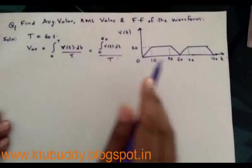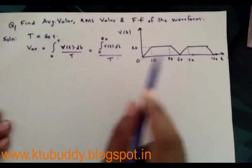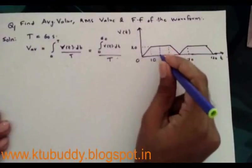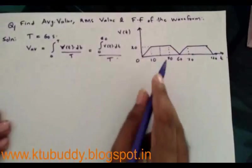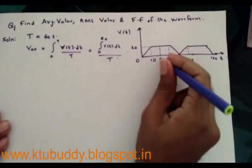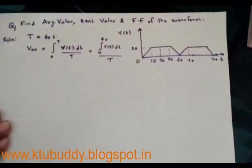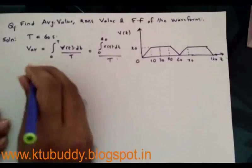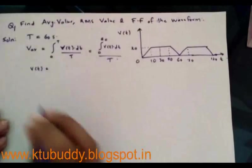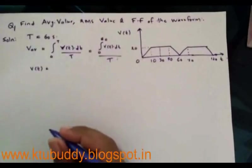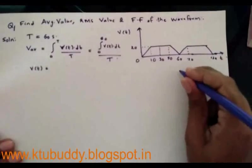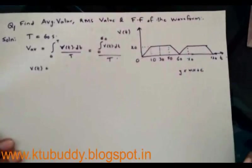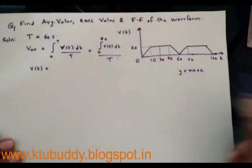The waveform consists of three sections: a triangular section, a rectangular section, and again a triangular section. I am going to split this waveform into two equal halves. Analyzing from 0 to 30, for the interval 0 to 10, v(t) is a sloped line. The equation of a sloped line is y = mx + c, where m is the slope and c is the y-intercept. Here the intercept on the y-axis is 0, so c = 0.